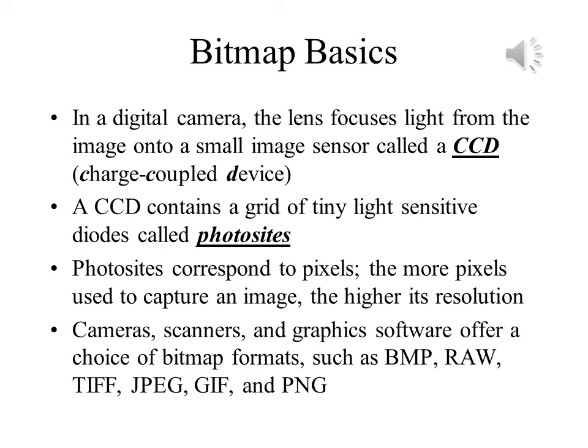Digital cameras have almost completely replaced film-based photography. The way they work is similar to how scanners work. The image passes through the camera's lens and strikes a sensor called a charge-coupled device, or CCD. The CCD contains a grid of tiny light-sensitive diodes called photosites. These photosites correspond to the pixels in the image. Digital cameras, scanners, and graphic software will offer the user a choice of different bitmapped formats. These include BMP, RAW, TIFF, JPEG, and PNG.